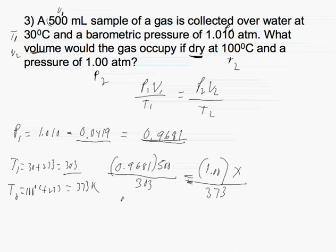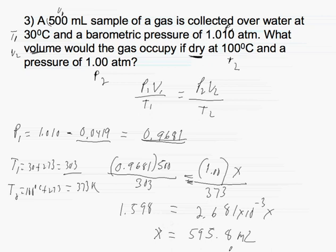When we do the math for this, we will get 1.598 is equal to 2.681 times 10 to the minus 3 times x. If we divide both sides by 2.681 times 10 to minus 3, x is equal to 595.8 milliliters.